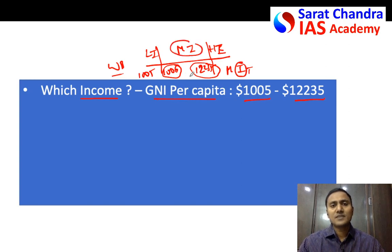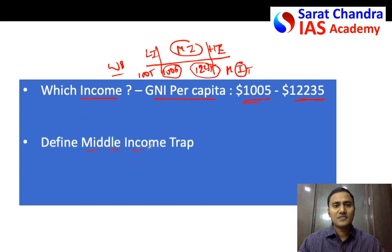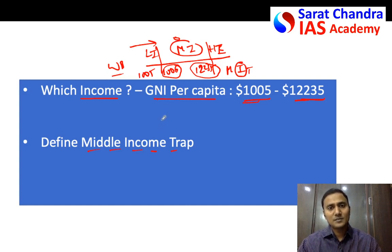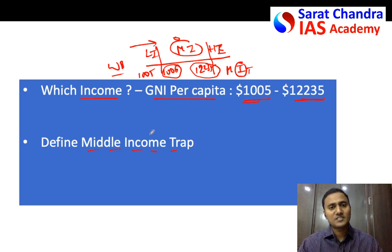Middle-income trap: a country which was growing fast previously, which had sustained GDP growth, suddenly sees its GDP growth stagnating in the middle-income range. The growth which happened in the past is not happening now — that is called middle income trap. The country you were expecting to reach higher income sees its GDP growth staggered in the middle income itself. That is the definition.